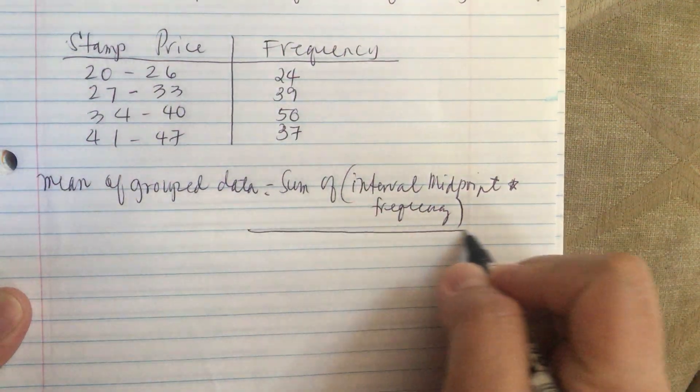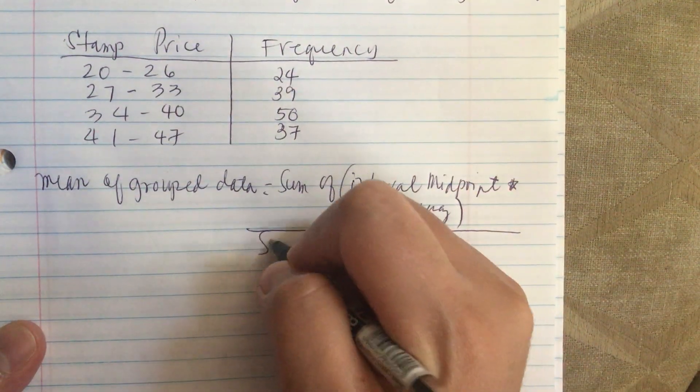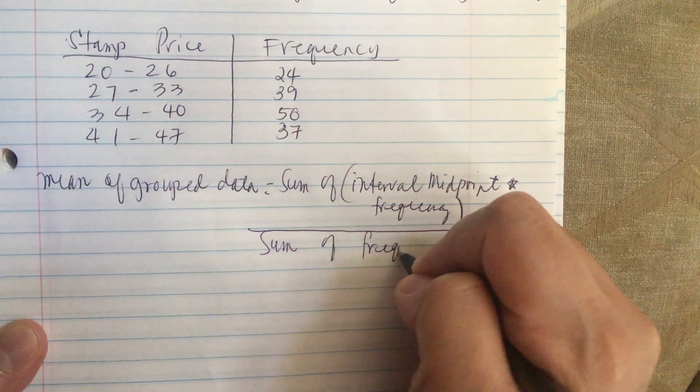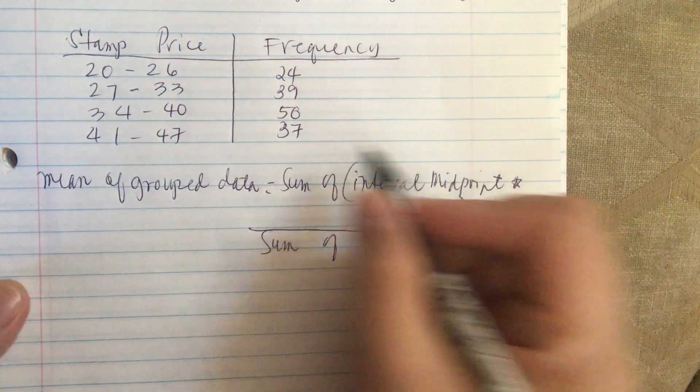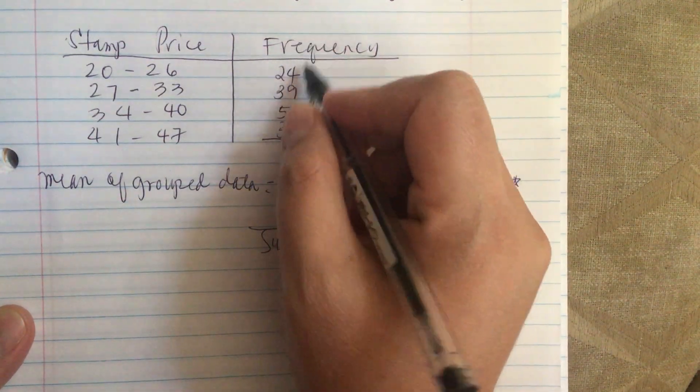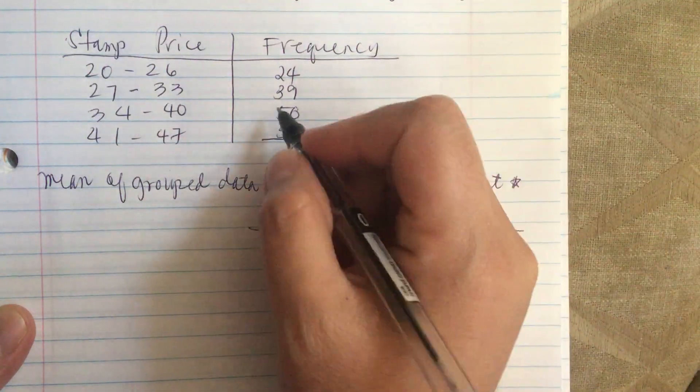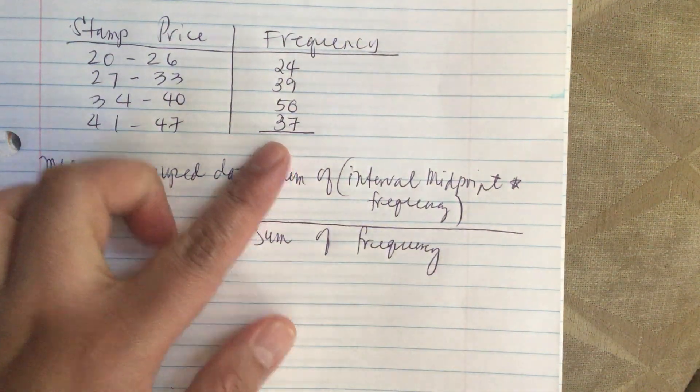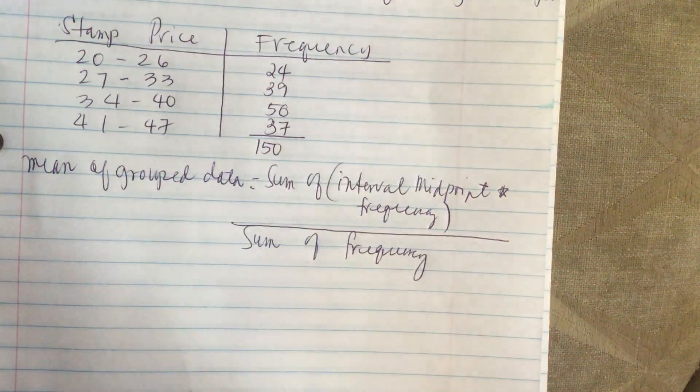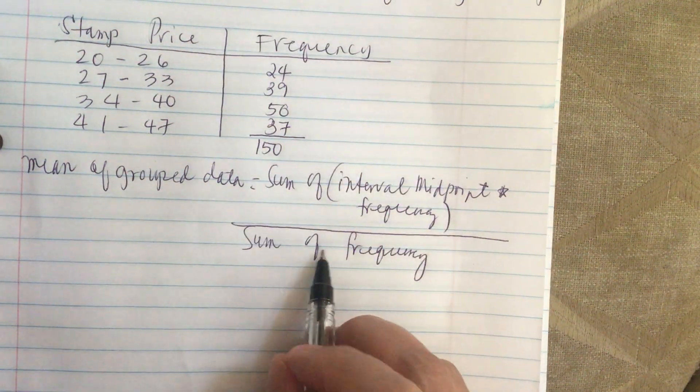On the bottom, this is divided by the sum of frequency. We'll need the sum or total of this column, which they told us is 150. So 150, this number goes in the bottom later.